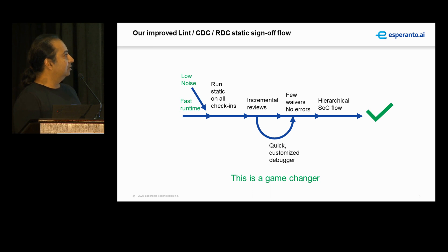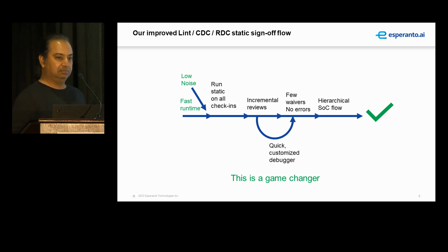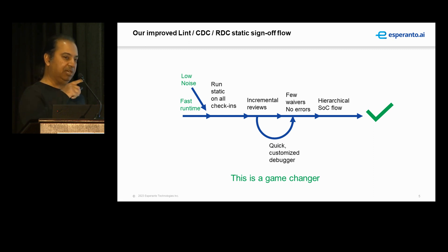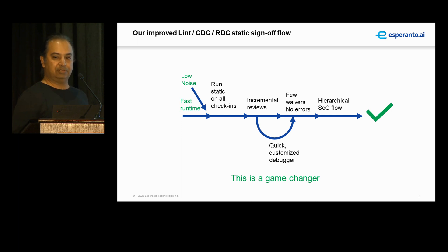Essentially, if you have static checking tools which are relatively low noise and fast runtime, then what we can do is actually enable lint checking and CDC and other things essentially on all check-ins. That leads to incremental reviews rather than giant piles of violations. The feedback is direct to the designer who just wrote the code — everything is fresh in his mind, he gets immediate feedback, he's able to fix it. And now we're in a situation where we can actually end up with no waivers, no errors, because very often it's actually easier to fix the problem than to go analyze it and put a waiver.